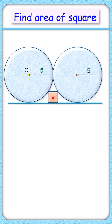Can you find the area of this square where given is the radius of this circle is 5 cm? Let's check the solution.